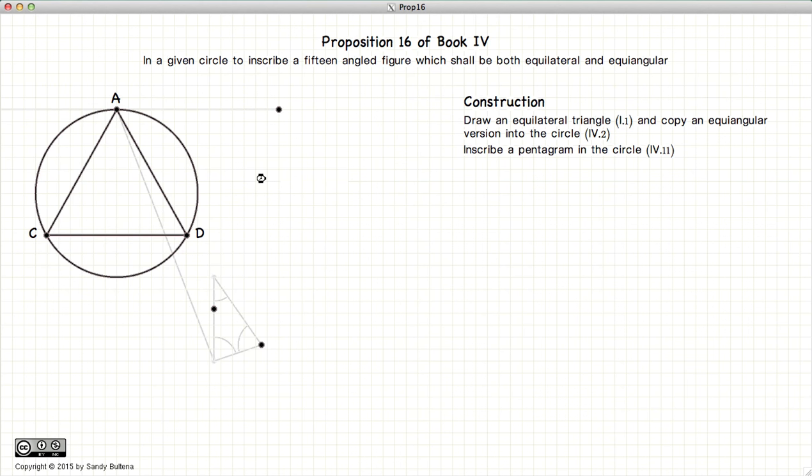Now we're going to inscribe a pentagon into the circle. Now of course it's not stated explicitly in the proposition in Euclid's Book, but at least one of the vertices must coincide between the triangle and the pentagon.